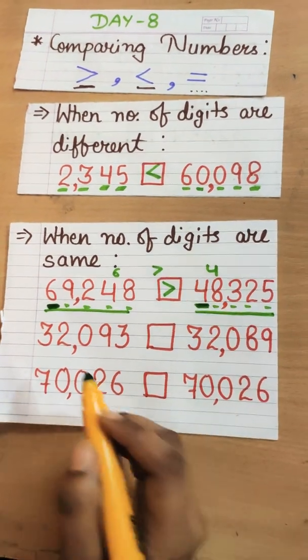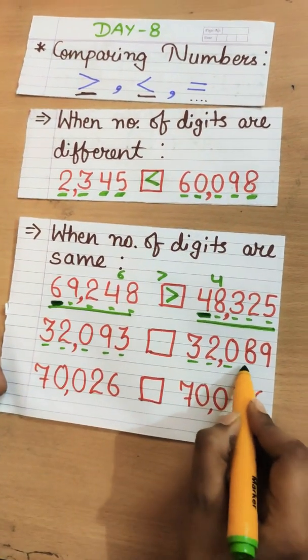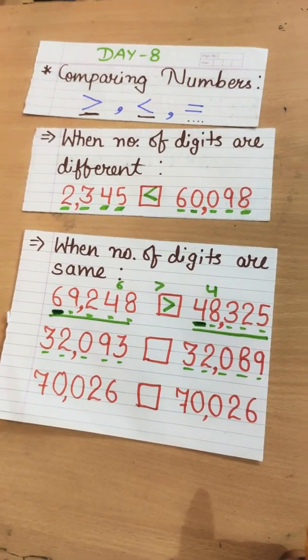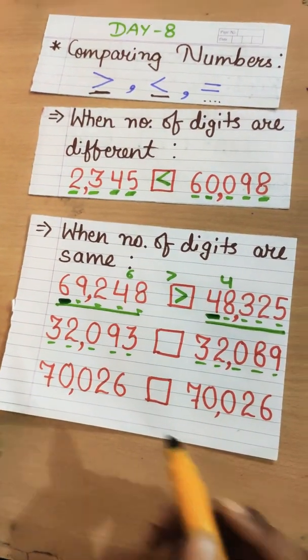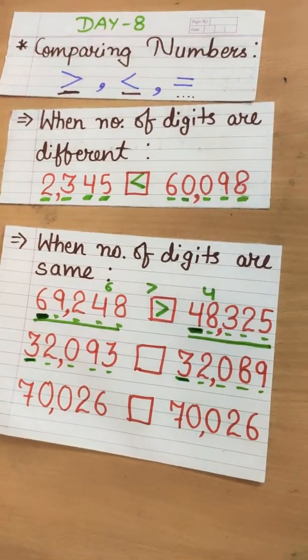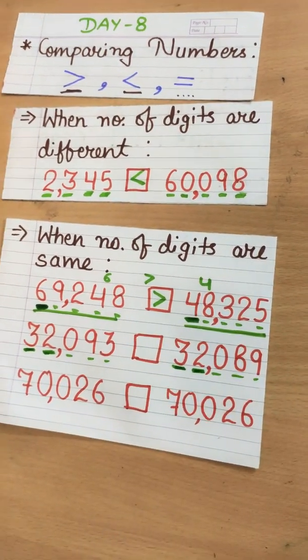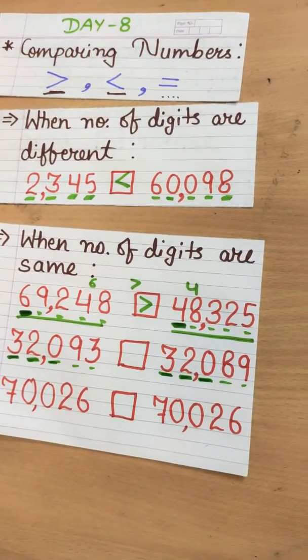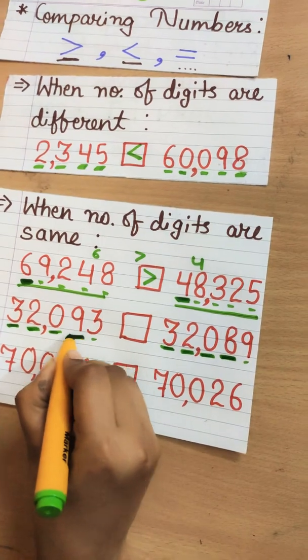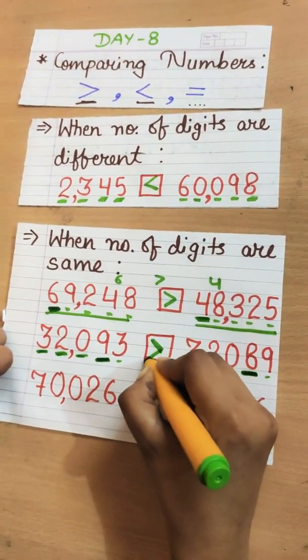Now, let's see the next number. Let's first count its number of digits. One, two, three, four, five. One, two, three, four, five. They both also have same number of digits. Now, let's compare their each and every place starting from the left most side. Three, three. Oh, no. It's the same. Can we say the numbers are equal? No. Let's compare more digits. Two, two. Still it's same. Zero, zero. Still it's same. Nine, eight. Okay. Just tell me, nine is greater or eight is greater? Obviously, nine is greater. So, this whole number is greater.